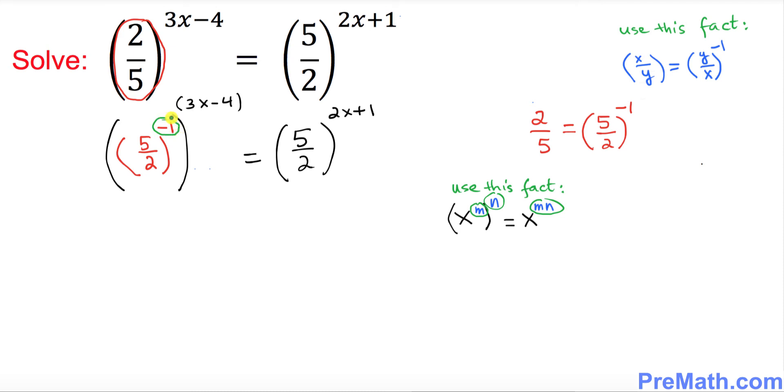Likewise, we have one exponent right up here, negative 1, the other one is this exponent. You just simply go ahead and multiply them out. So I can put down 5 over 2 power negative 1 times 3x minus 4 equals to 5 over 2 power 2x plus 1.